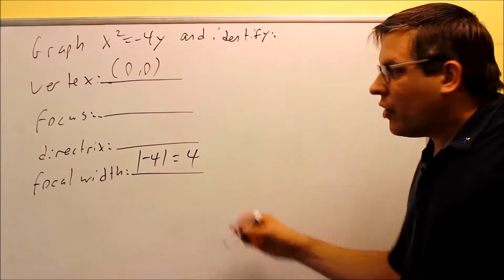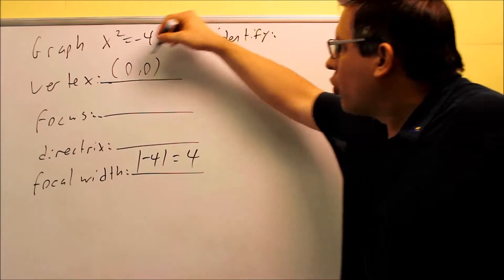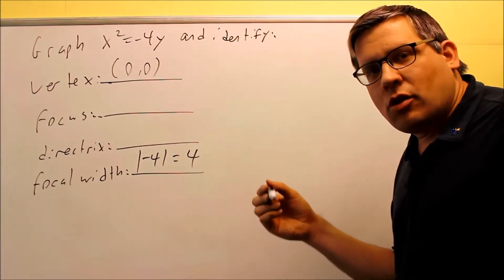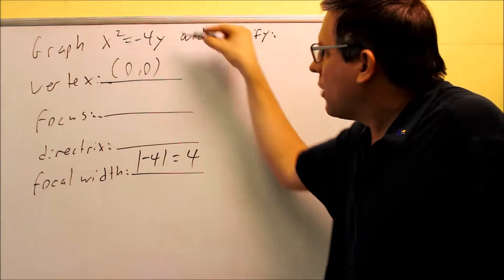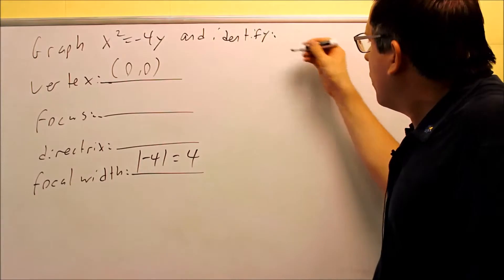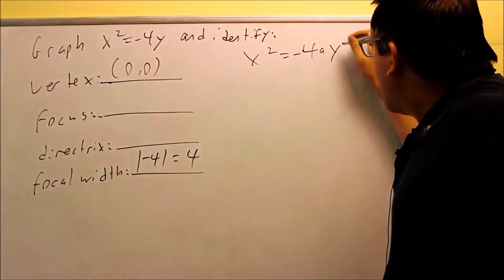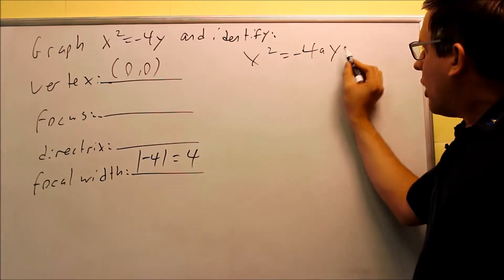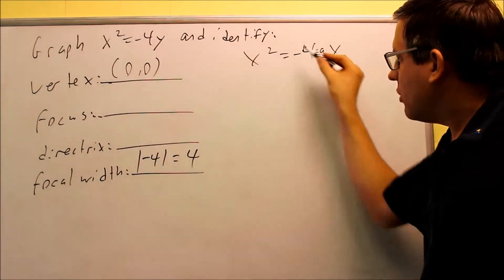Now we need to do the graph, and I'm going to get this information directly from the graph itself. I want to look at my four models — the link to those models and my lecture notes is in the description of this video. We look at the four models and try to match it up with what this one looks like. The one it matches is x-squared equals negative 4ay. We match it to x-squared and to y, and we pick the one with a negative because there's a negative in the formula itself — that's how you know which one to use.